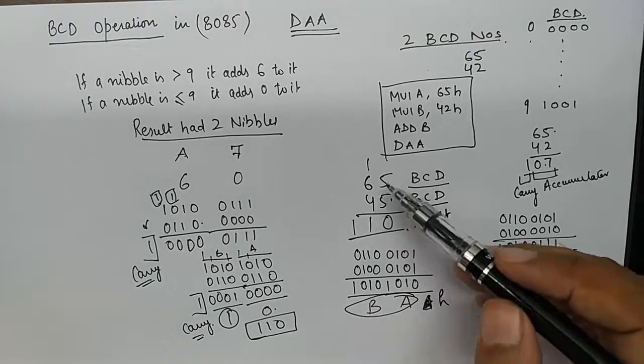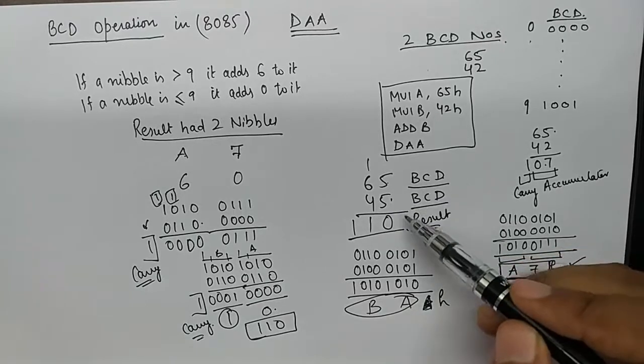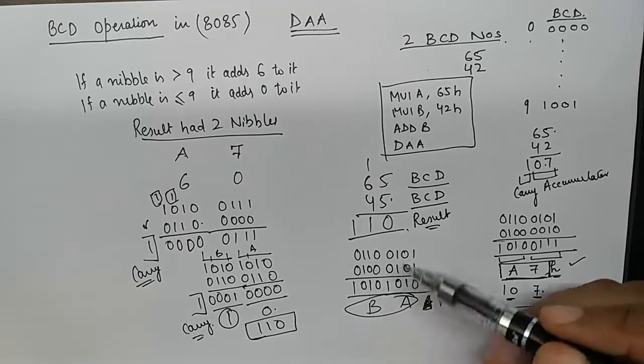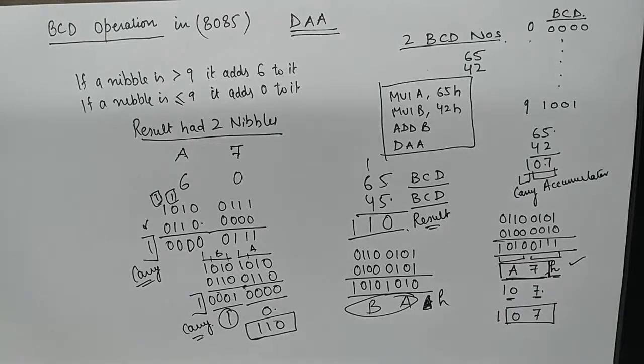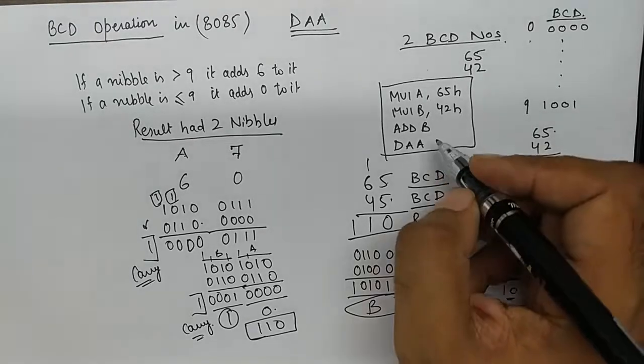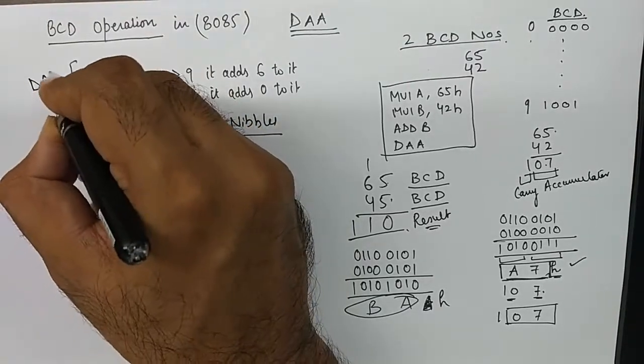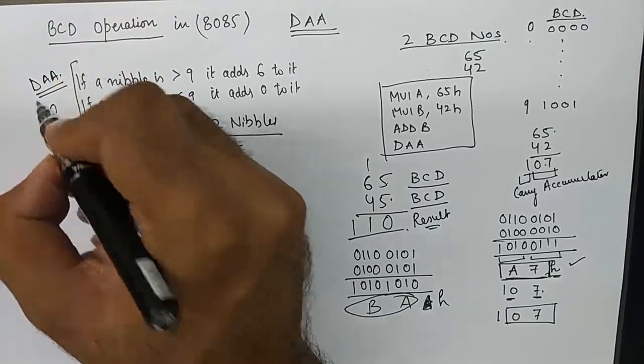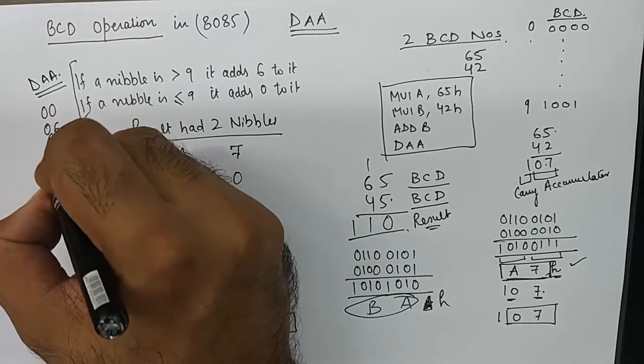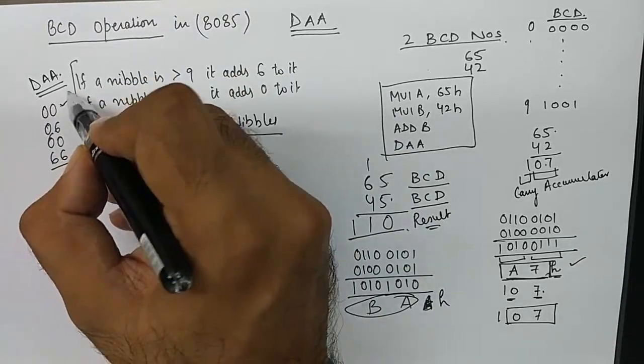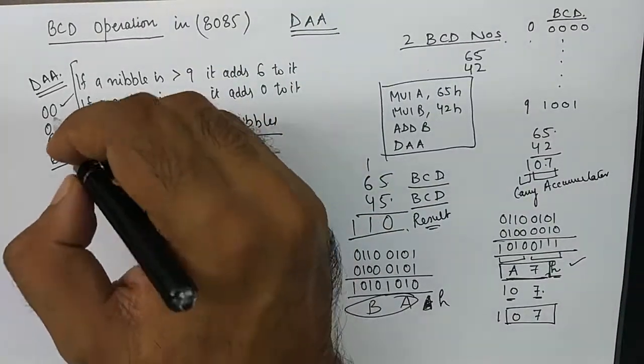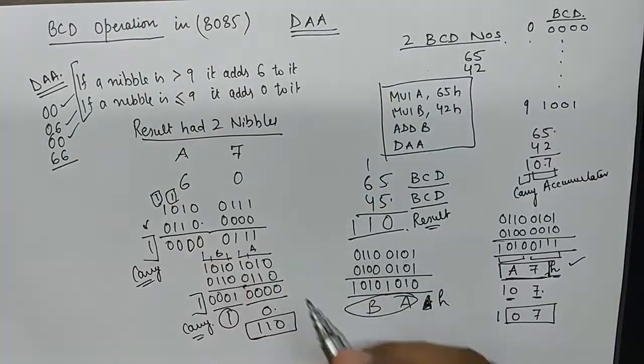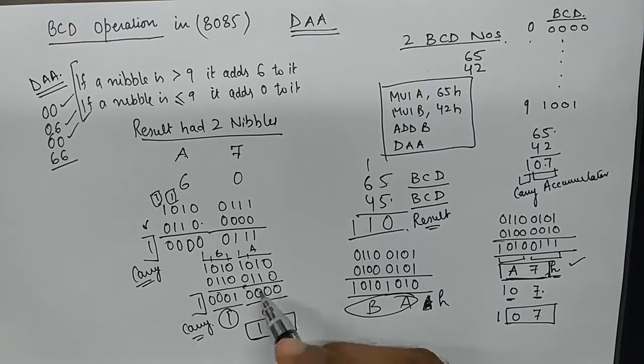So there you can see that if two BCD numbers yield a result where both the nibbles are greater than 9, then DAA would automatically add 6, 6 to both the nibbles. So all in all, if DAA is executed, what you can expect is microprocessor will either add 0, 0 to the result or 0, 6 or 6, 0 or 6, 6. This is the case when none of the nibbles are greater than 9. This is the case where the first nibble is greater than 9. This is the case where the second nibble is greater than 9. This is the case where both the nibbles are greater than 9, like we discussed here.